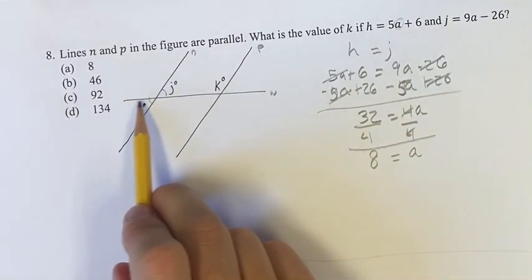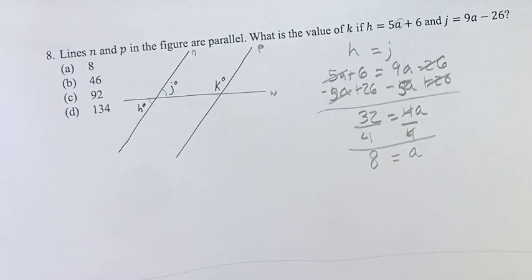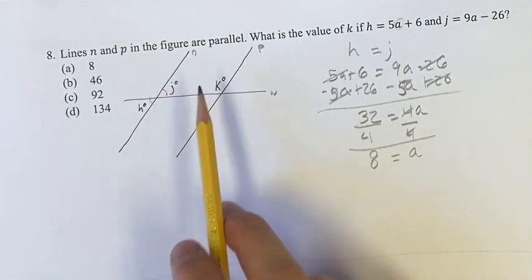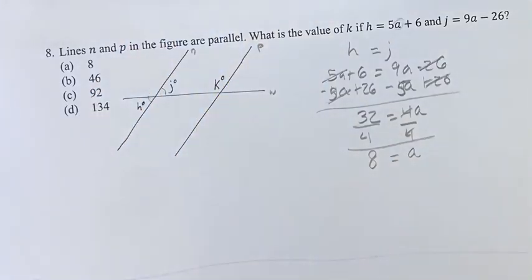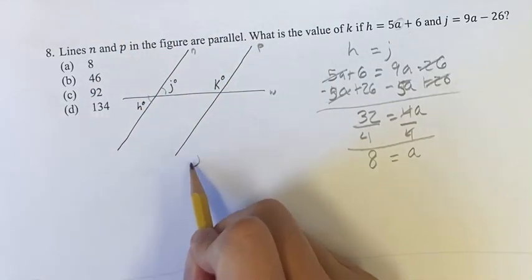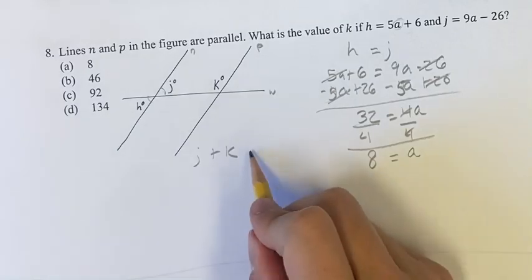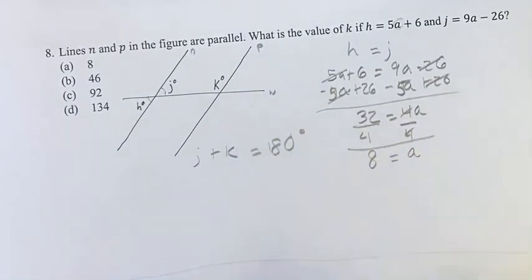On the same side of this line w that's intersecting, these two interior angles, that means it's in between the parallel lines, these two angles j and k, and it adds to 180 degrees.